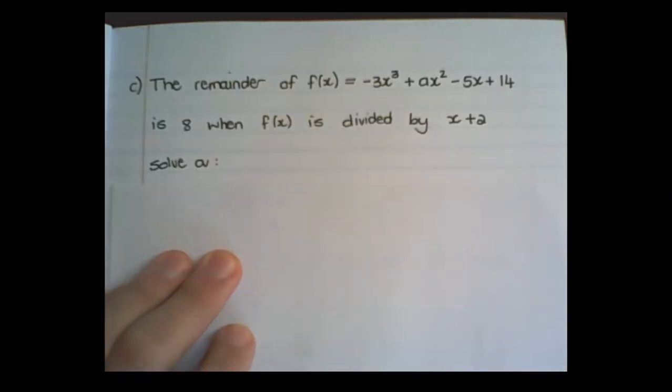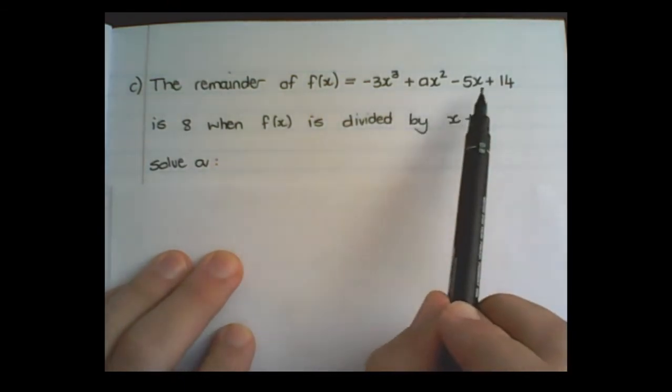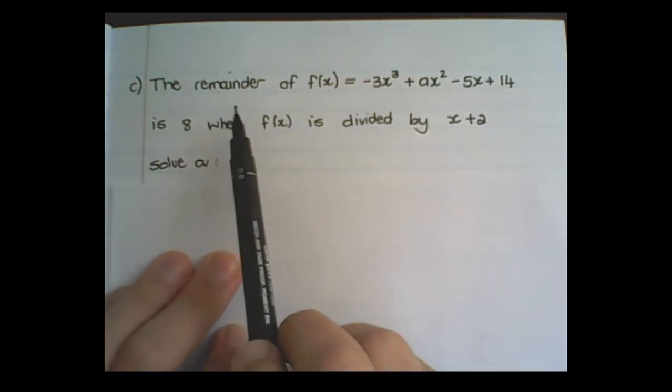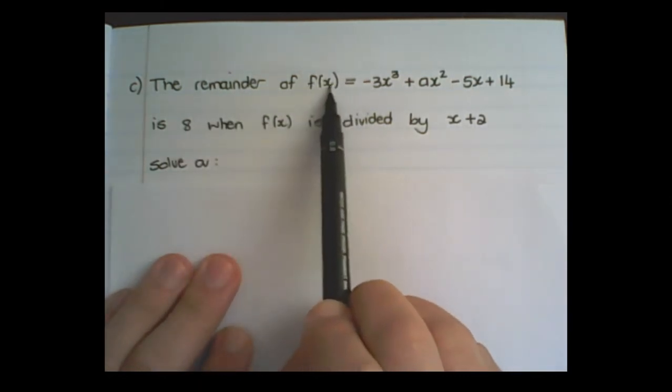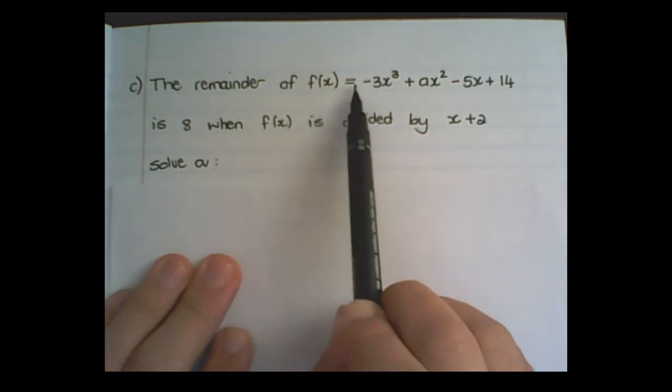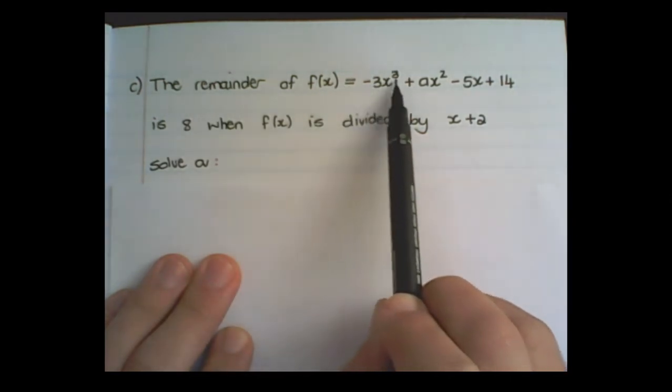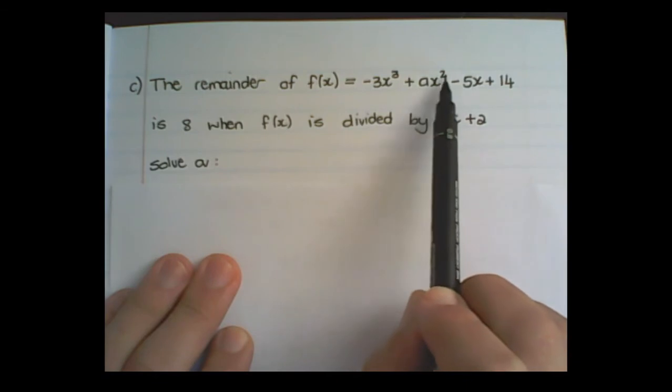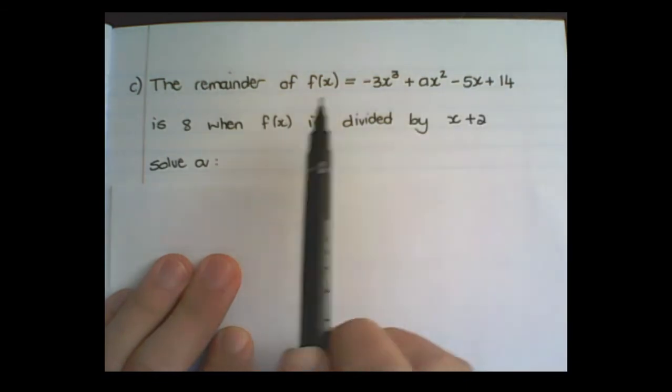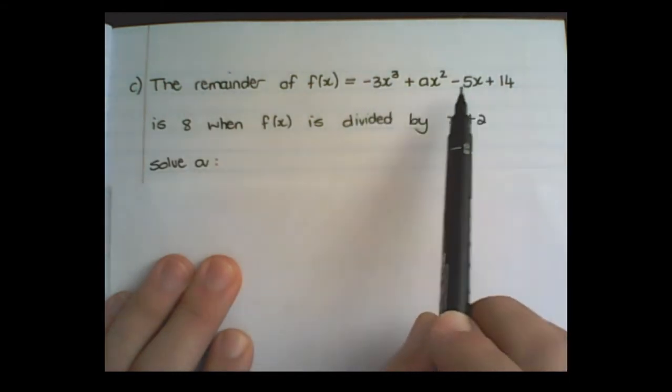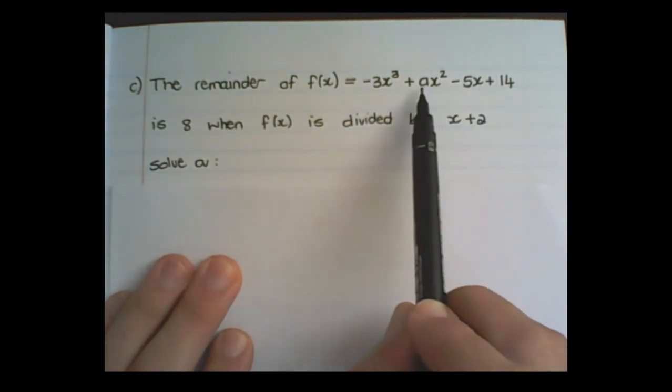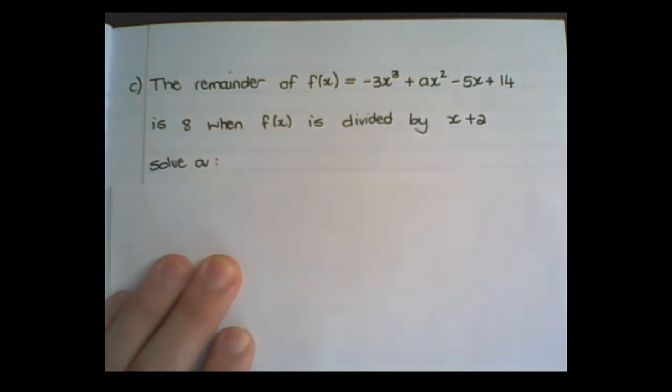You can also use the remainder theorem to find values of variables in the expression. The remainder of f(x) = -3x³ + ax² - 5x + 14 is 8 when f(x) is divided by x + 2. Find or solve the value of a.